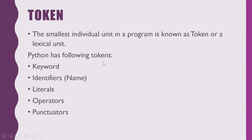The first term is token. A token is the smallest individual unit of a program, also known as a lexical unit. Whatever we use in Python — keywords, identifiers, literals, operators, or punctuators — all these things are known as tokens.